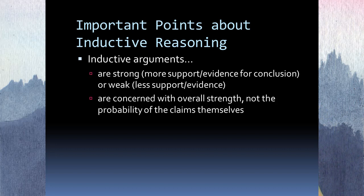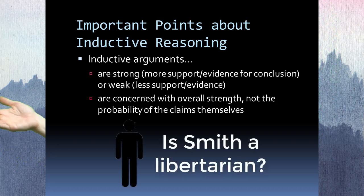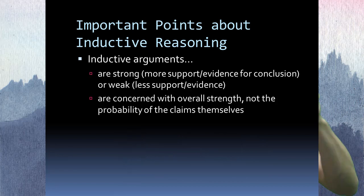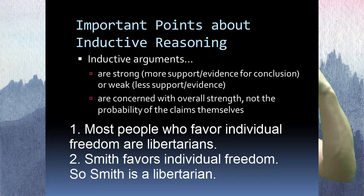Premises and conclusions should be seen as one well-oiled machine that work together. If I just take some guy named Smith off the street and ask how likely is it that he's a libertarian politically, that's a different question than if I already know Smith favors individual freedom and conclude he's a libertarian from that. The probability that he's a libertarian given that he favors individual freedom is different from just the overall probability of a single claim.